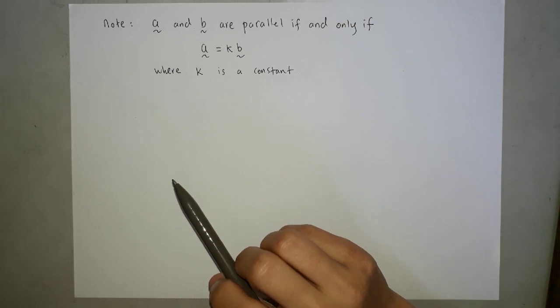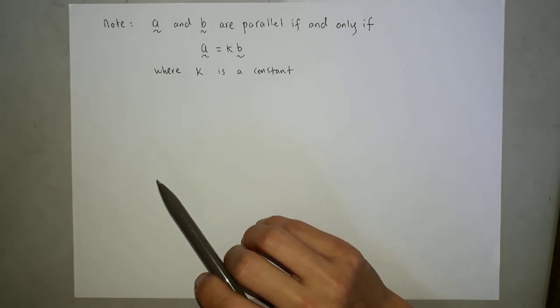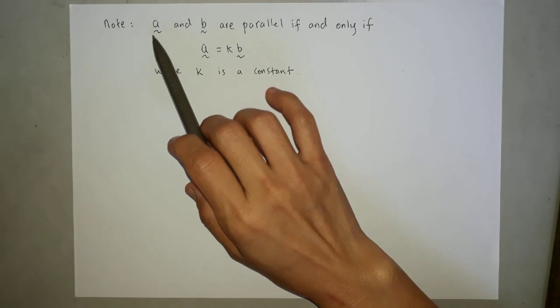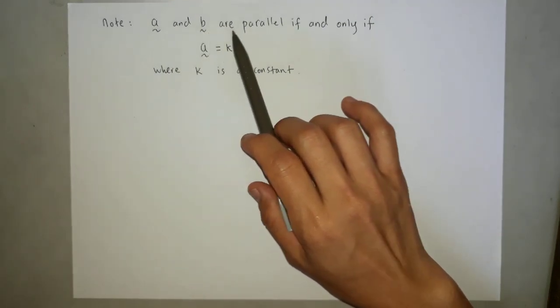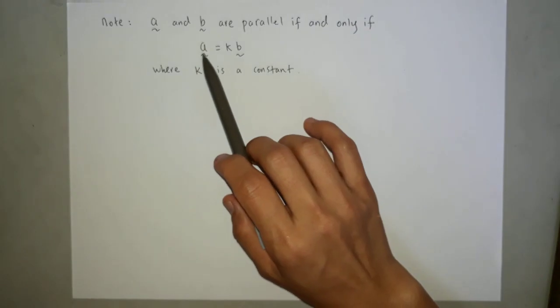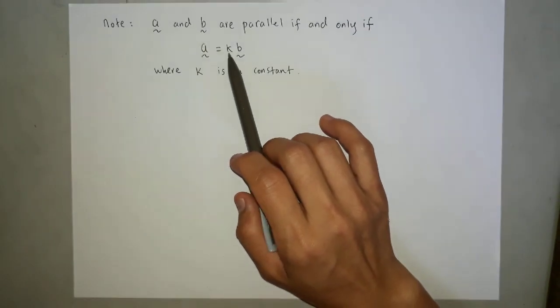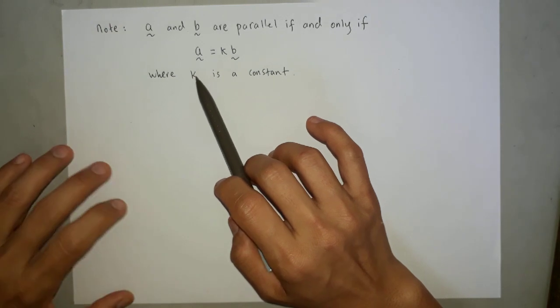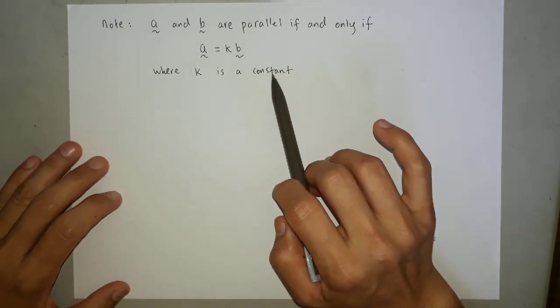Then we are going to learn parallel vectors today. See the notes. Vector A and vector B are parallel if and only if vector A equals to k vector B, where k is a constant.